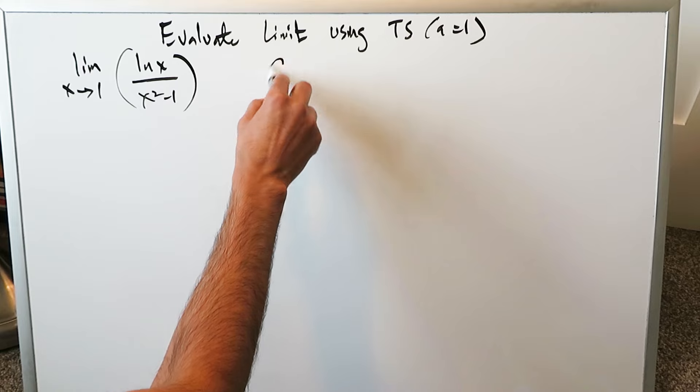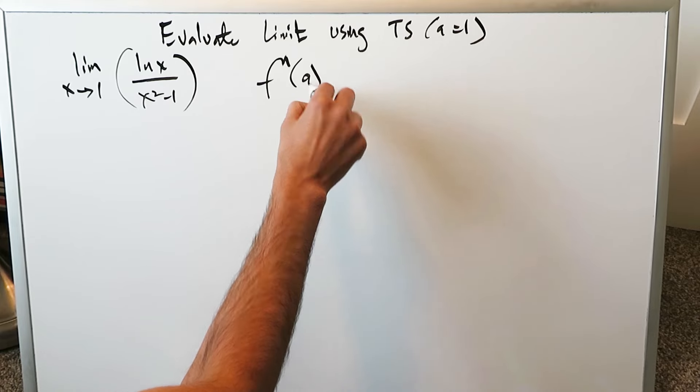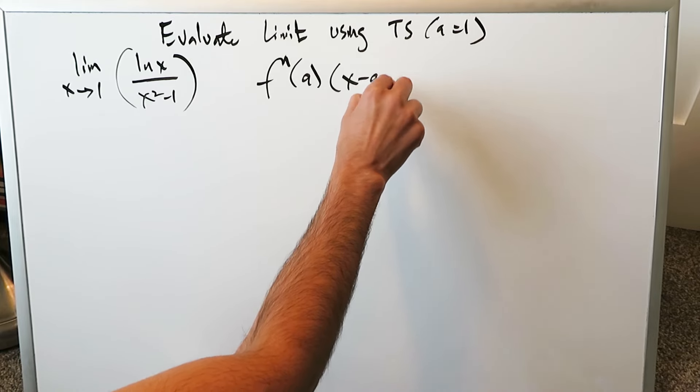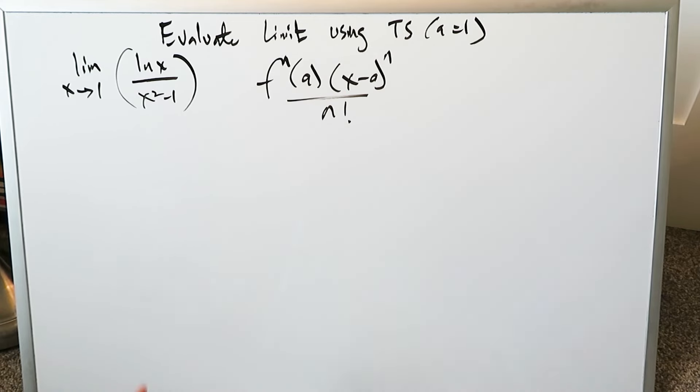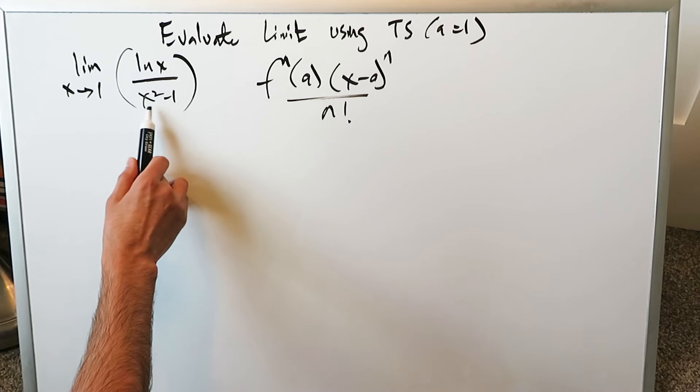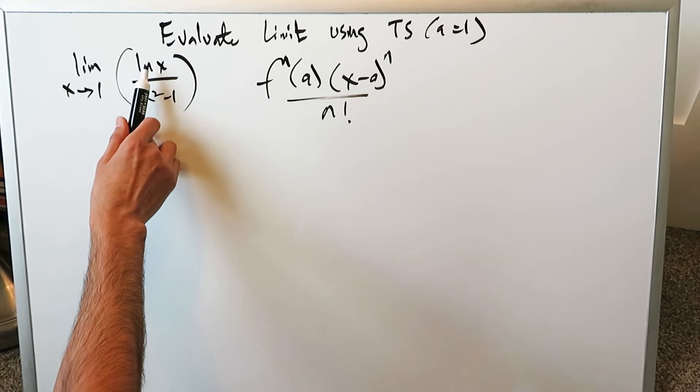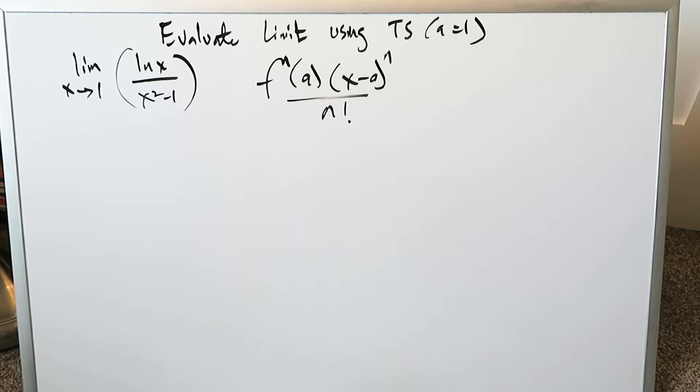What's the template for Taylor series? You know the nth derivative always with the A value, x minus A to the power of n, divided by n factorial. You will do that for what you see here in play. You're not going to do an expansion of x squared minus 1. You will do an expansion of natural log x.